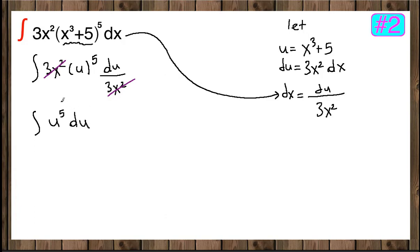Now, we know how to take the anti-derivative of u to the 5th. Anti-derivative of u to the 5th is, we add 1 and divide it by the power plus c. So, it's going to be 1 over 6, u to the 6th plus c.